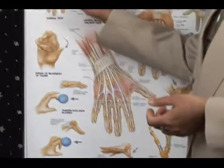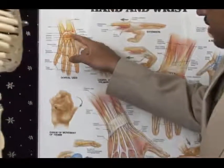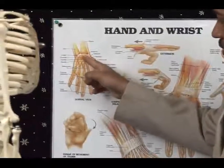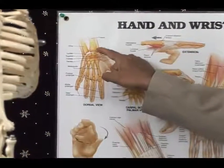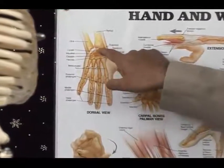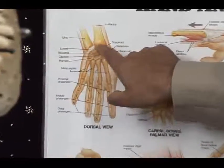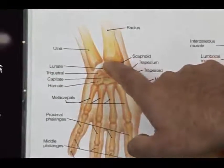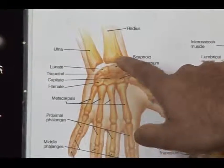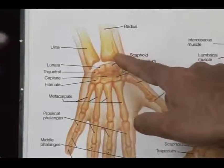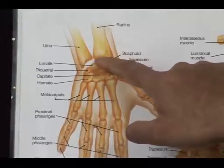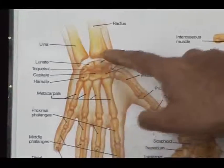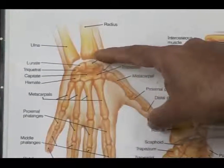Looking at the bones themselves, the scaphoid bone can undergo fracture. The distal end of the radius can have a transverse fracture through the growth plate, which is especially common in children but also in young adults.